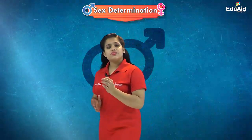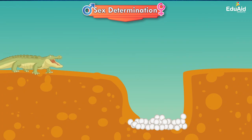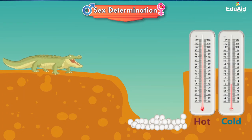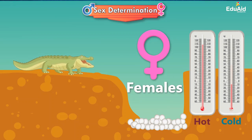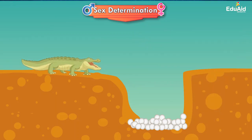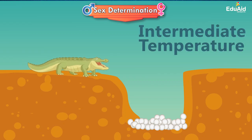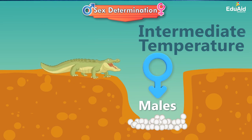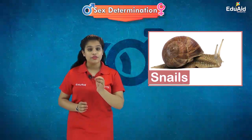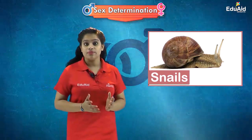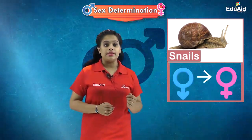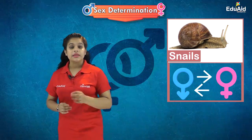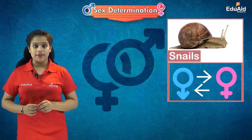Similarly, in another reptilian species — the alligator — eggs hatching from higher and colder temperature areas hatch as all females; only the eggs hatching in the intermediate temperature region hatch as males. There are also certain species of snails in which individuals can transform themselves from males to females and vice versa. But this isn't the case for human beings.